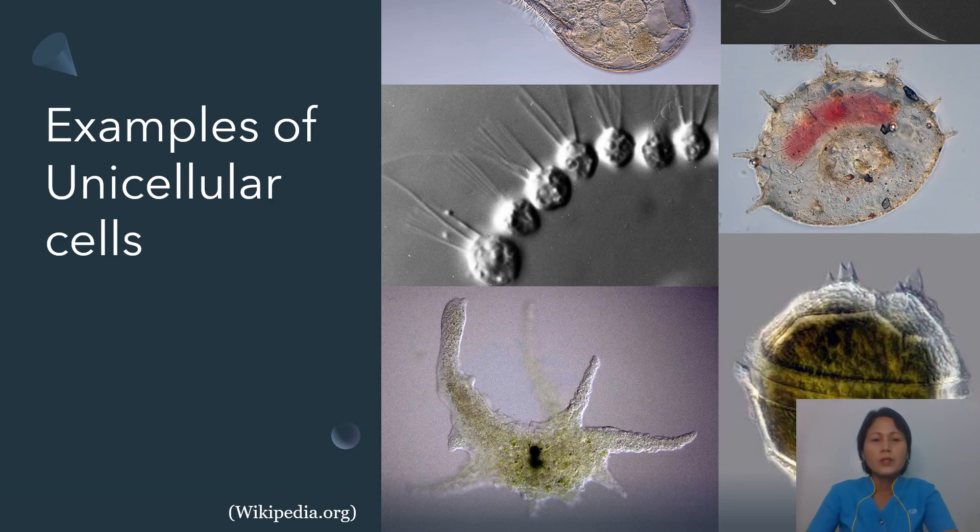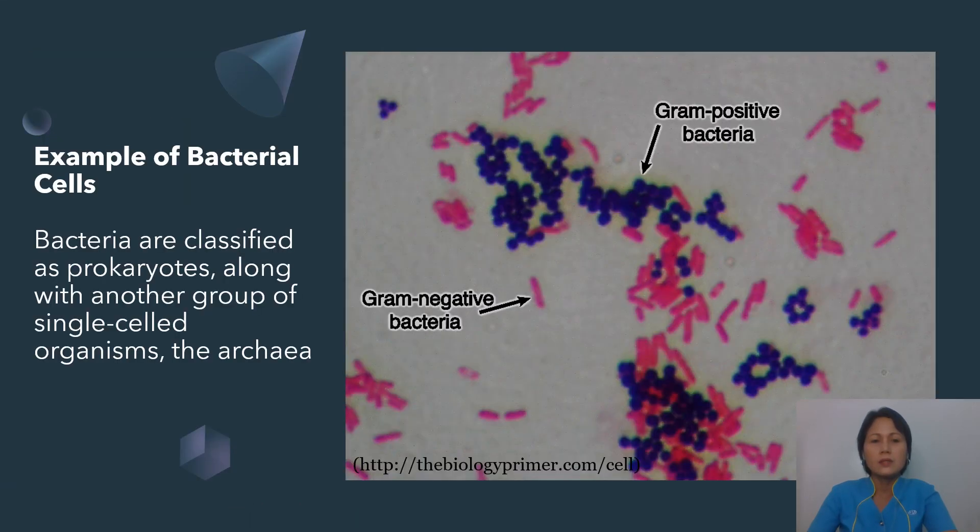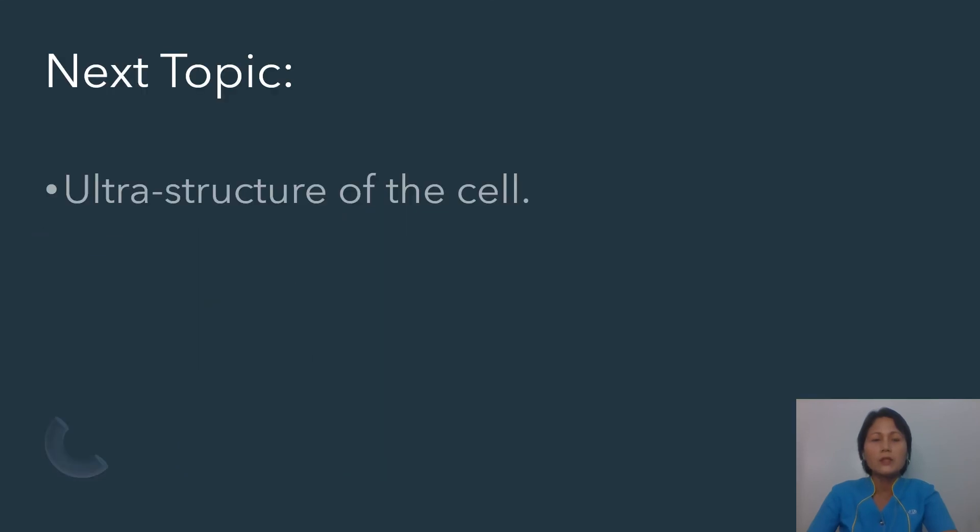We also have here examples of unicellular cells. Best examples of this are actually the protease and the bacterial cells. Classified as prokaryotes, bacterial cells can either be gram-positive or gram-negative bacteria.